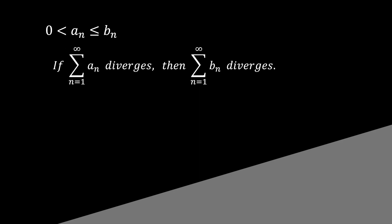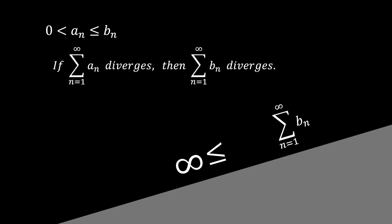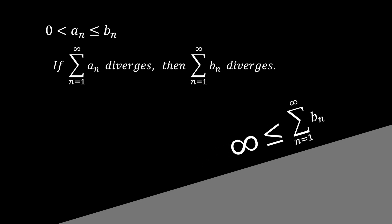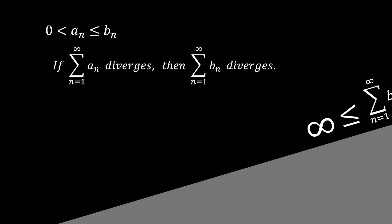Here we have the second statement of the direct comparison test. If the infinite sum of a_n diverges, then the infinite sum of b_n also diverges. Looking at the slope, the infinite sum of b_n is positioned higher than the infinite sum of a_n because b_n is greater than a_n. Now, if the infinite sum of a_n diverges to infinity, this value keeps increasing, climbing higher and higher on the slope endlessly. Consequently, the infinite sum of b_n, which already has a greater value, also must climb endlessly, leading to its divergence.